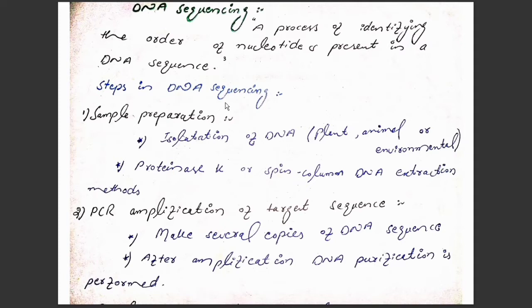What are the steps involved in DNA sequencing? The first step is sample preparation. First, we will isolate the desired DNA from plant, animal, or environmental sources. If we want to get high quality DNA, we can use proteinase K or the spin column DNA extraction method. Once we get the desired DNA, in the second step using a PCR machine we will do amplification of the target sequence.